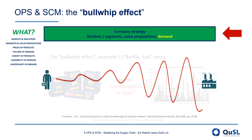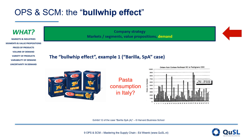The bullwhip effect has been widely documented, for example in the famous Barilla case by Harvard Business School. It tells the story of widely variable demand of pasta in Italy when it comes to distribution orders to Barilla's central warehouse, whereas one would expect that pasta consumption in Italy should be fairly stable.